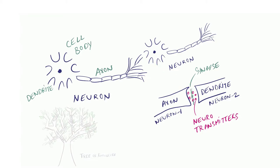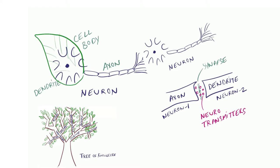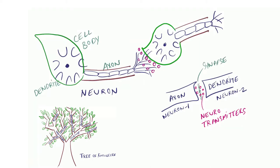Now, to draw a simple connection between the tree of knowledge and our actual brain, the leaves are the cell body, branch is an axon, and the connection between the leaves is the synapse.